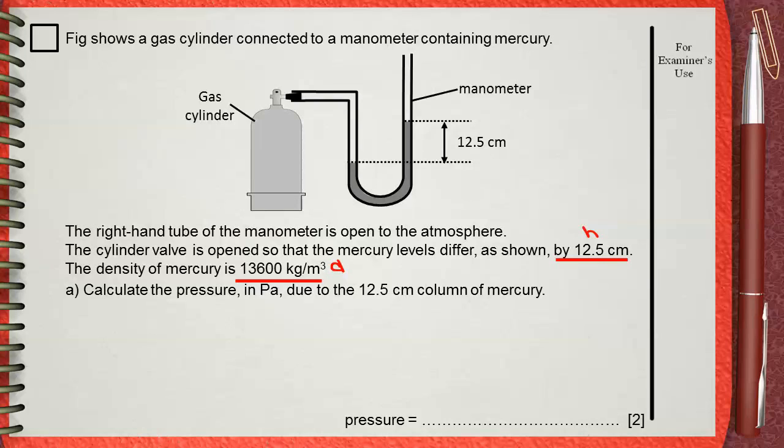Of course the rule that will help us will be pressure equals DGH, density times G times height H. Density will be 13,600 which is the density of mercury. Of course the constant G is 10.